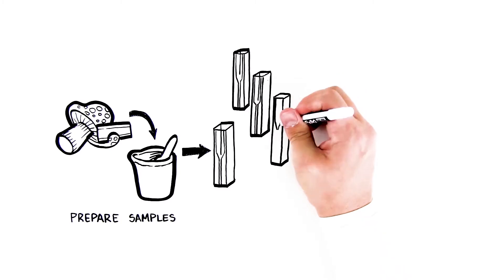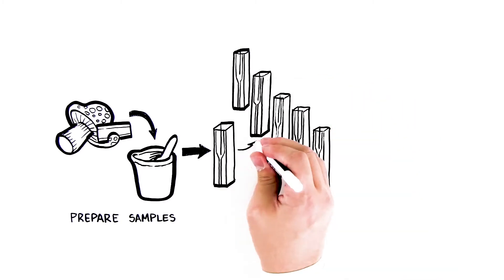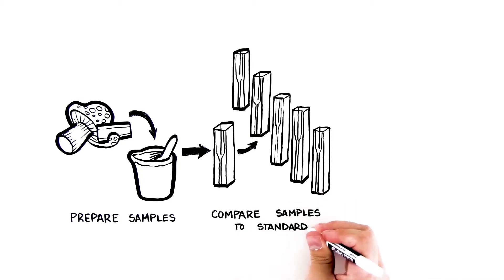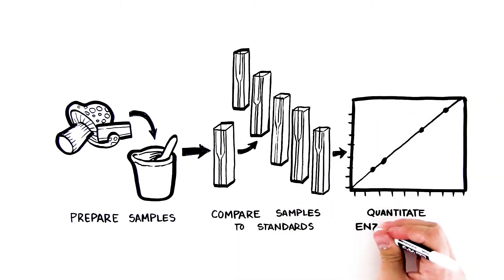Students measure the activity of purified cellobiase in Activity 1, then test how different experimental conditions impact the enzyme's function to determine the conditions for optimum activity for biofuel production.